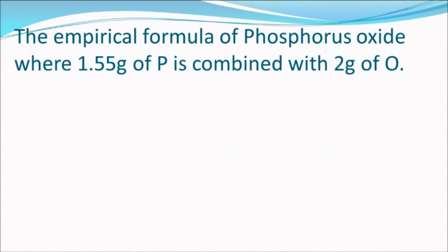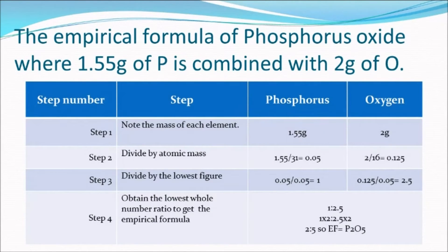To summarize, let's find the empirical formula of phosphorus oxide using four steps. Step 1: note the mass of each element. Step 2: divide by atomic masses. Step 3: divide by the lowest figure. And finally, Step 4: obtain the lowest whole number ratio to get empirical formula.